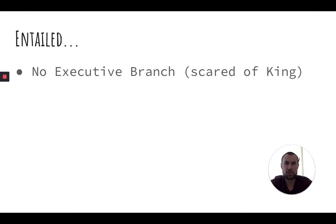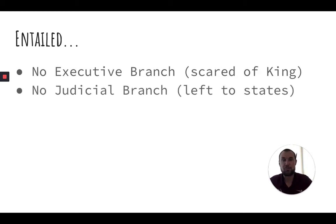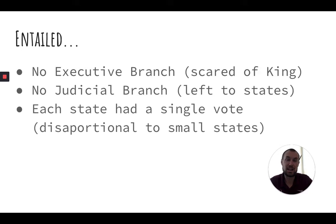What did the Articles of Confederation actually entail? We need to know this because it sets us up for the Constitution and the Constitutional Convention. First, there was no executive branch — people were way too scared of having another king. The only branch they had was a legislative branch; it was unicameral, meaning one house or congress. There was no judicial branch either — that was left up to the states, which is going to be a problem, especially when we get to Shays' Rebellion. Also, each state in that congress had a single vote, meaning small states were equal to larger states, which rubbed larger states the wrong way. You can already see the idea of having two houses forming.